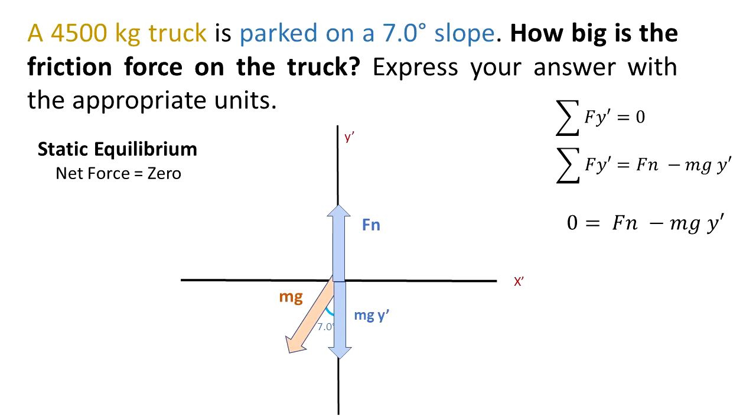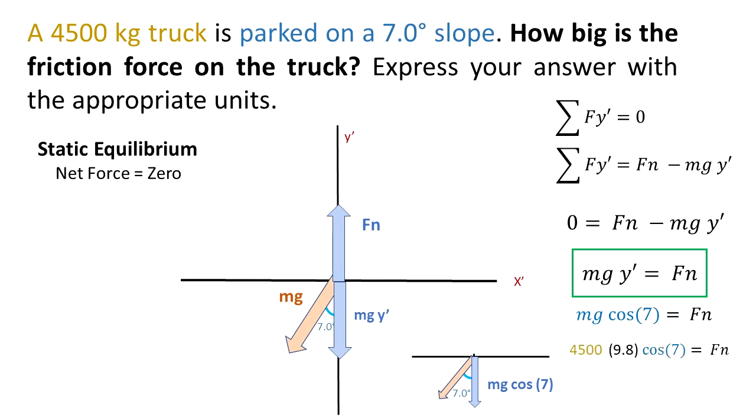Mg y' is the component of Mg that goes in the negative y' direction. And we find that the normal force is equal to Mg y', is equal to Mg'. Mg y' is Mg cosine of 7, because cosine is the adjacent over the hypotenuse.